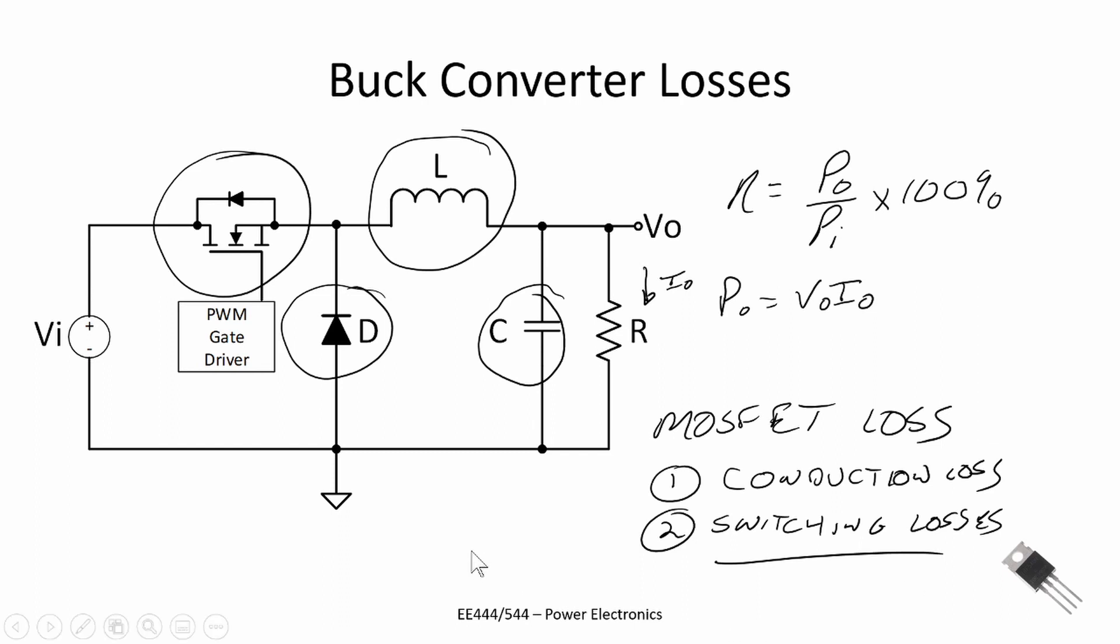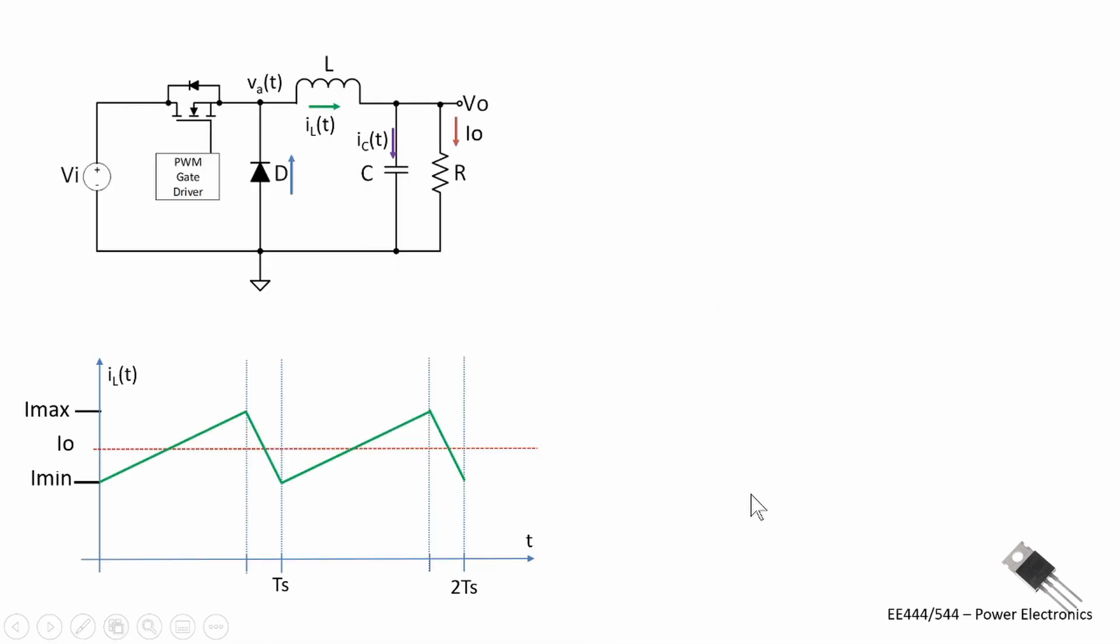Let's look at the different conduction losses in the inductor, capacitor, and diode. Starting with the inductor, we see we have a ripple current through that. And if we looked at an effective value, we would see that the power loss due to conduction is the equivalent series resistance of the inductor times the average current through the inductor, which can be found with this equation. We have to square that current. It's an I squared R loss.